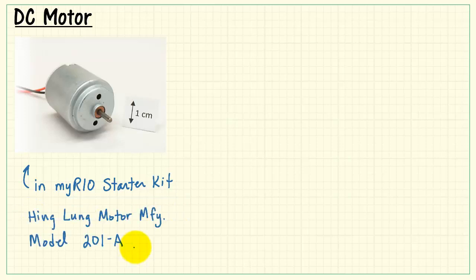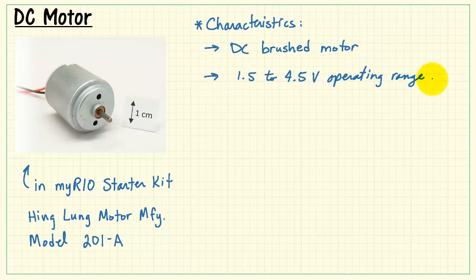It's the Hing Lung Motor Manufacturing Company, Model 201-A. Let's review some of the key characteristics. It's a DC brushed motor. It's intended to operate from 1.5 to 4.5 volts, which means one, two, or three 1.5-volt batteries in series.